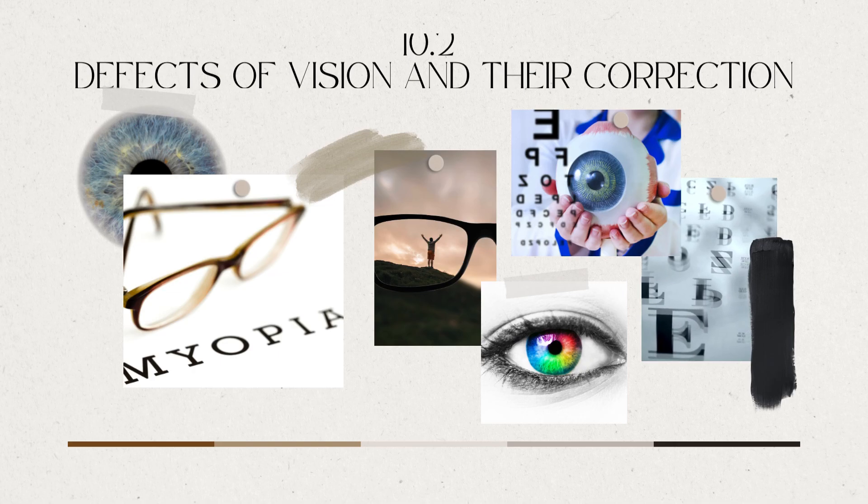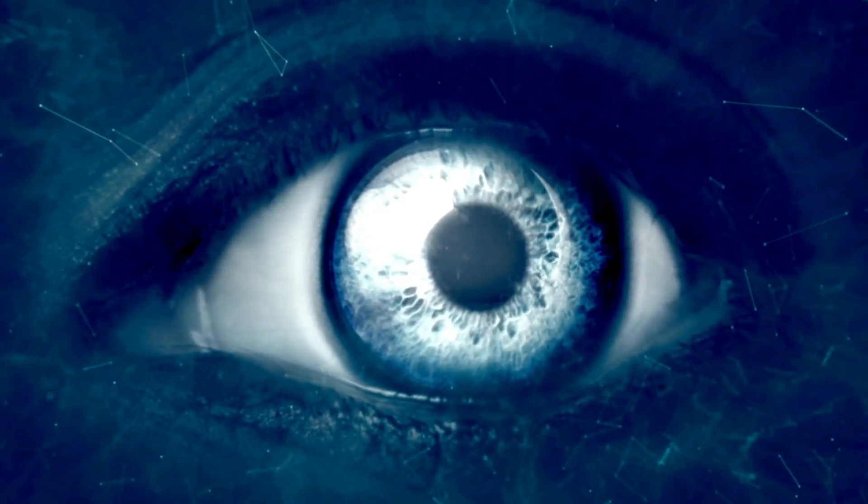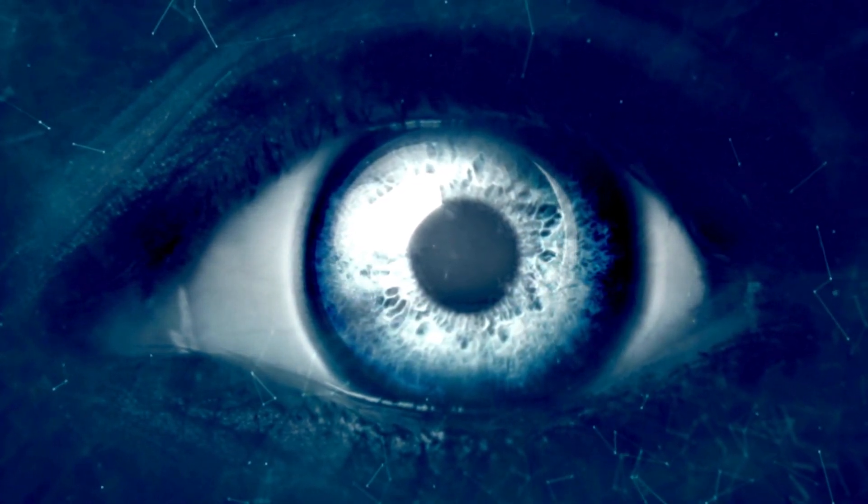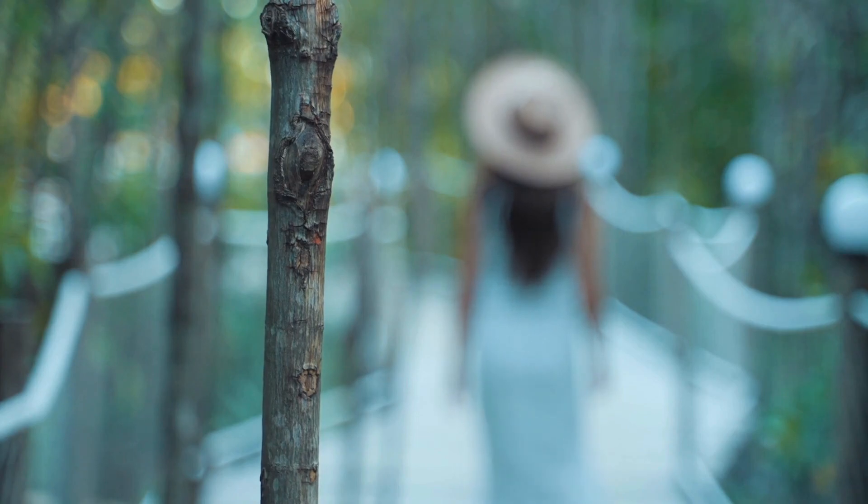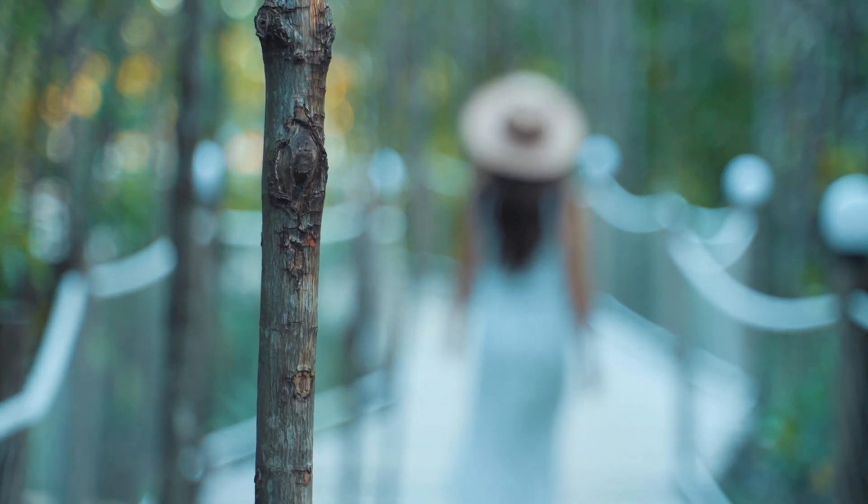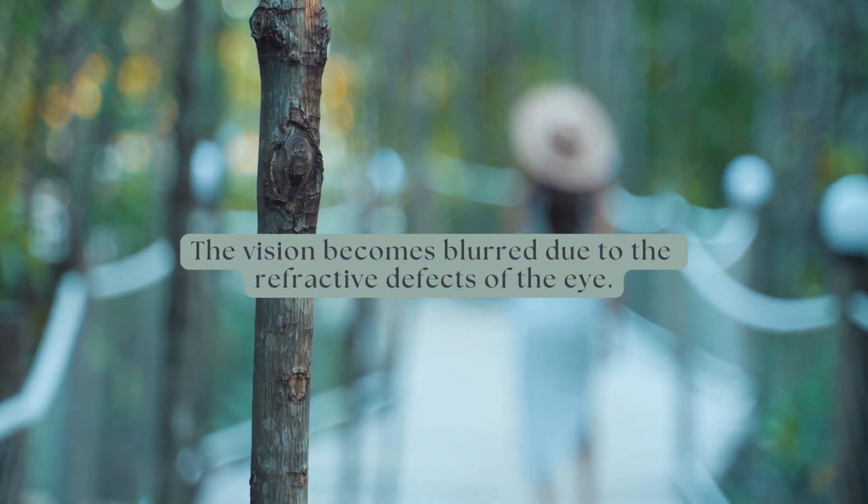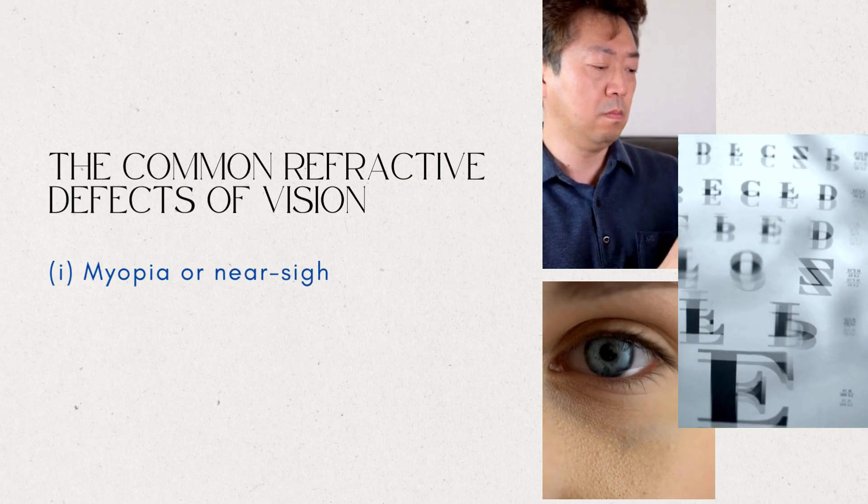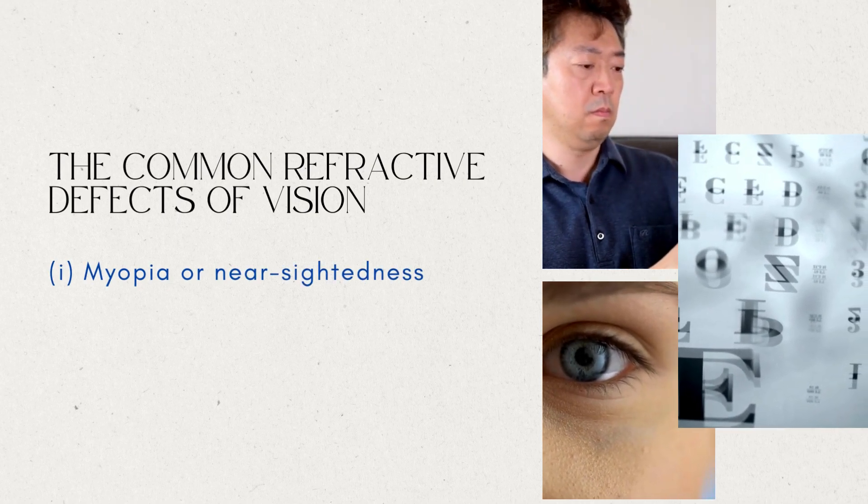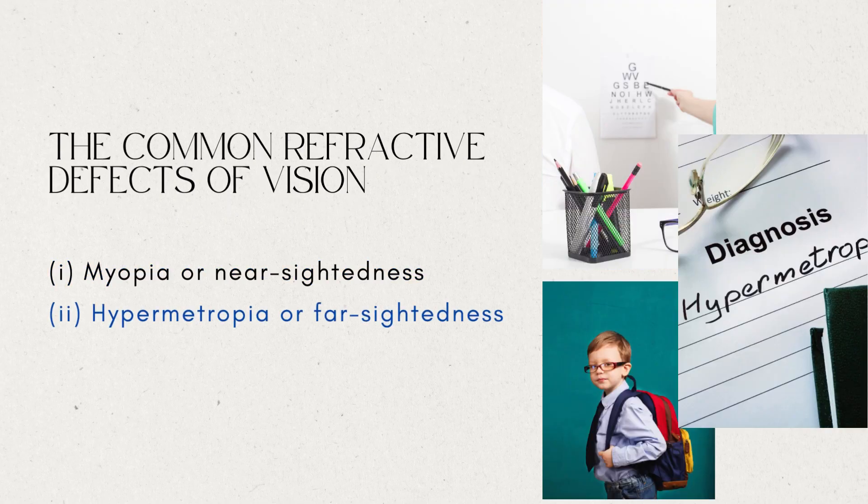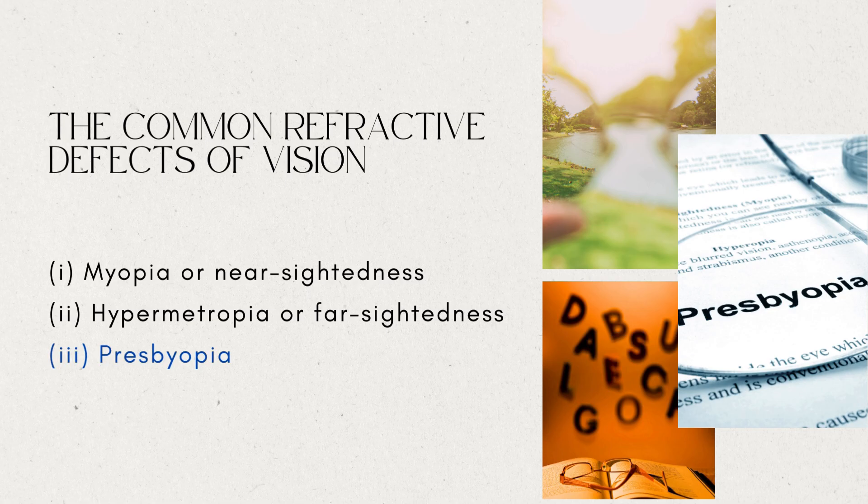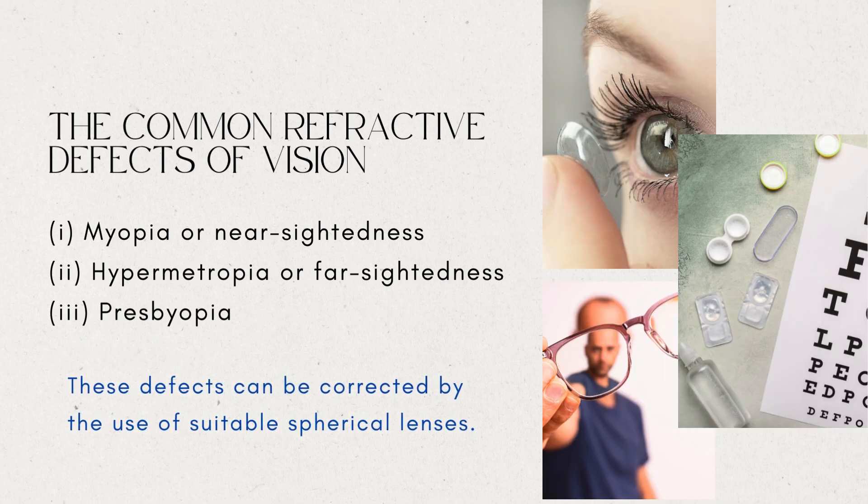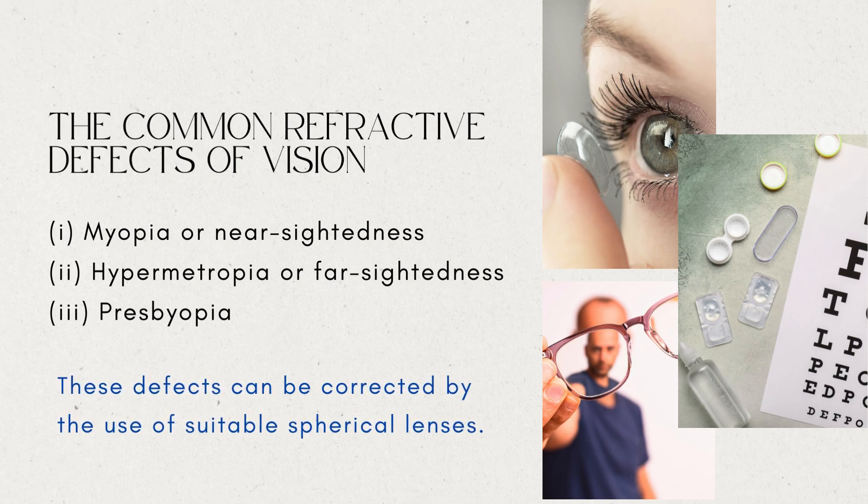Now, let's see defects of vision and their correction. Sometimes, the eye may gradually lose its power of accommodation. In such conditions, the person cannot see objects distinctly and comfortably. The vision becomes blurred due to the refractive defects of the eye. There are mainly three common refractive defects of vision: myopia or nearsightedness, hypermetropia or farsightedness, and presbyopia. These defects can be corrected by the use of suitable spherical lenses.